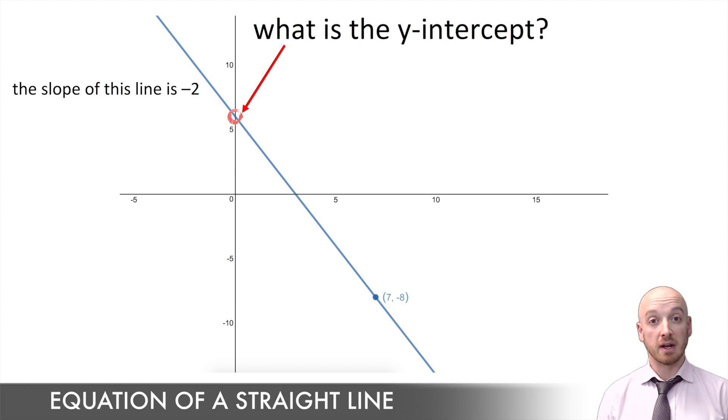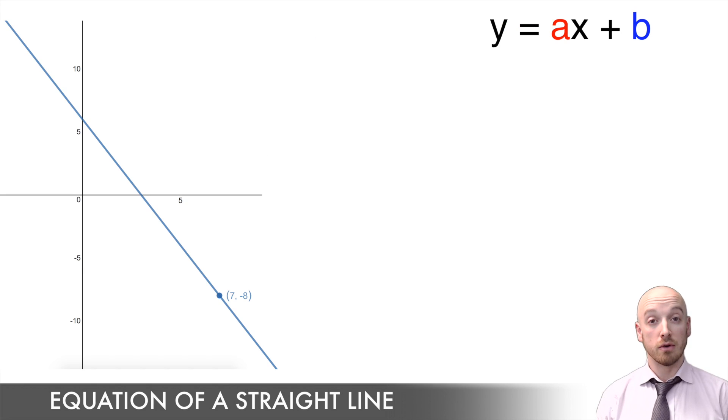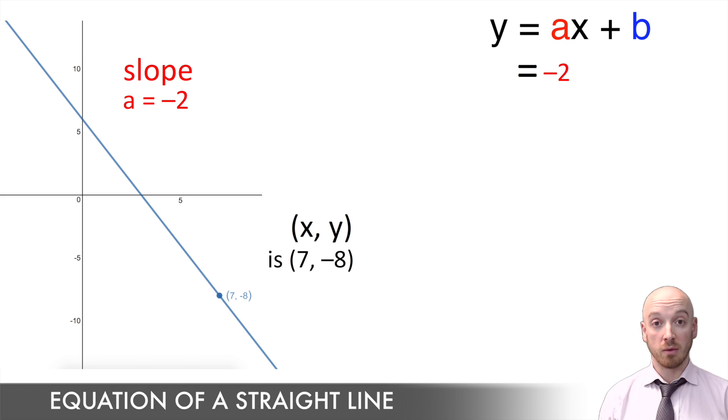The first thing to do is always to write out the format of the equation. And you know that's y equals ax plus b. Now, I just told you the slope was negative two, so you're gonna go ahead and plug that in where you see a. And I told you that x and y were seven and negative eight. So where you see x, you replace it with seven. Where you see y, you replace it with negative eight. And since we don't know the y-intercept, that's b, we're gonna leave the b as a variable. And to solve for the y-intercept, all I need to do is carry out my operations and isolate that variable.